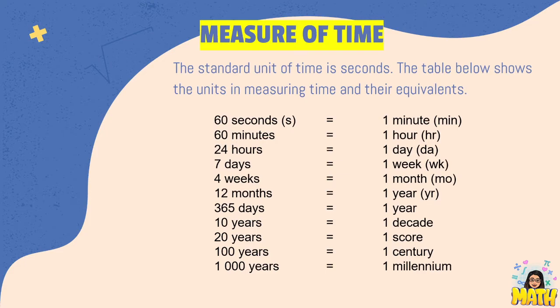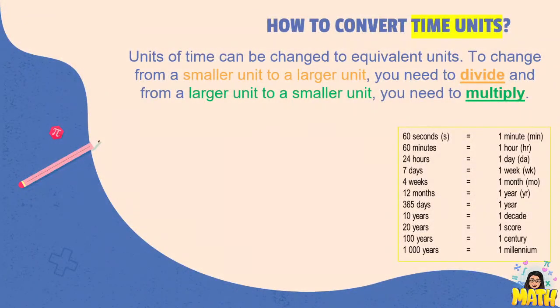So how do we convert time units? Units of time can be changed to equivalent units. To change from a smaller unit to a larger unit we need to divide, and from a larger unit to a smaller unit we need to multiply. So kailangan alam natin if smaller to larger ba yung kino-convert natin para appropriate din yung operation na gagamitin natin.